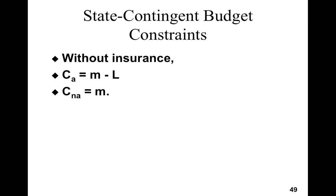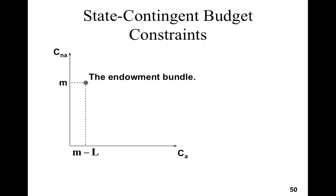Let's think about it more generally. Without insurance, what would be your consumption in different states? Without insurance, you would consume your total dollar income minus the loss when the accident occurs — that would be the total consumption available. If there is no accident, you have all of m available to spend on consumption goods. This is what we call the endowment bundle, which tells you what you would consume if you just abide by the consumption limits given by the states.